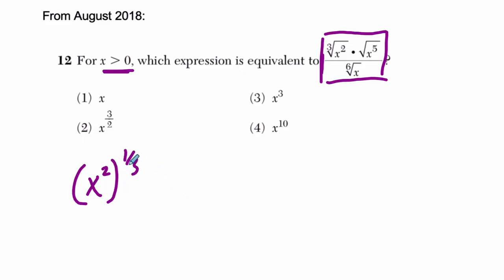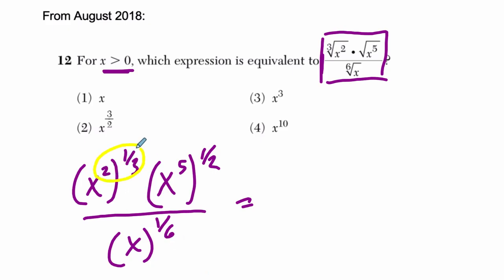How do we do that? Well, this says the third root of x squared. The third root of x squared, then we have the third root of that. The third root is just 1 over 3, just like the square root is 1 over 2, and so on. Then we have x to the fifth, and then the square root of that, and then we have just x to the first with the sixth root.